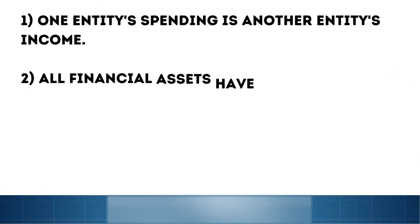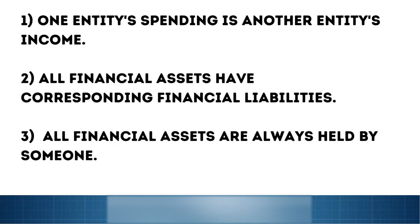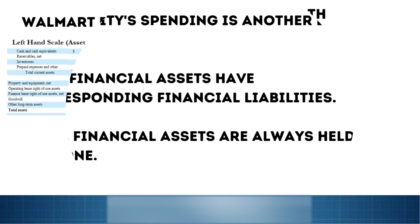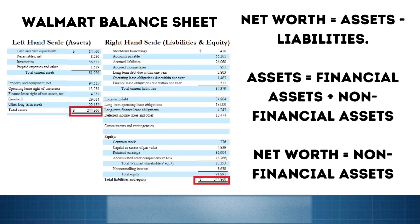Three important understandings related to all of this: One, one entity's spending is always another entity's income. Two, all financial assets have corresponding financial liabilities. And three, all financial assets are always held by someone. At a personal level, net worth equals assets minus liabilities. But it's important to understand that at the aggregate level, all of these financial assets and liabilities balance out. And so our net worth at the aggregate level is really comprised of non-financial assets — all of the real stuff in the economy.